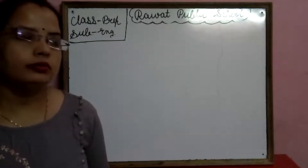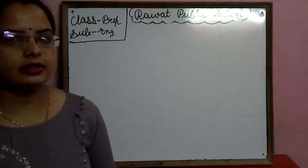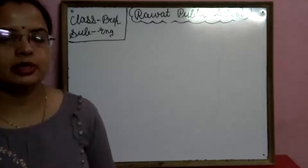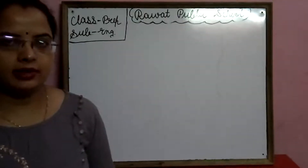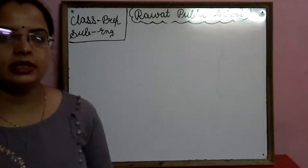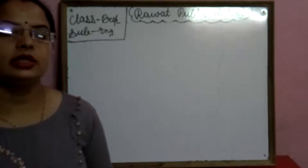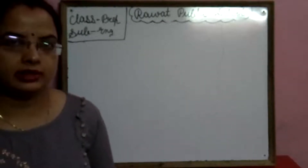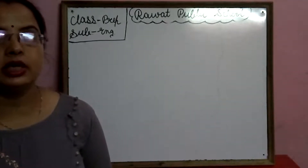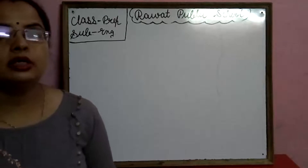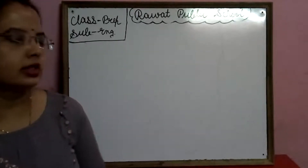We have completed A to Z cursive letters — capital cursive letters, small cursive letters. Now today we will start double E sound words.